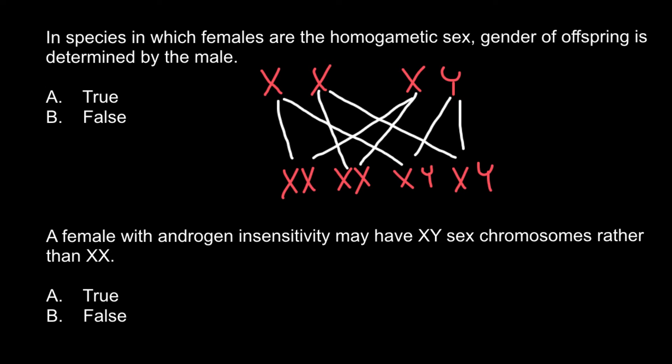But in our example, in XY sex determination system, where females are homogametic, sex would be defined by the two types of gametes that males can produce. So the correct answer would be A.